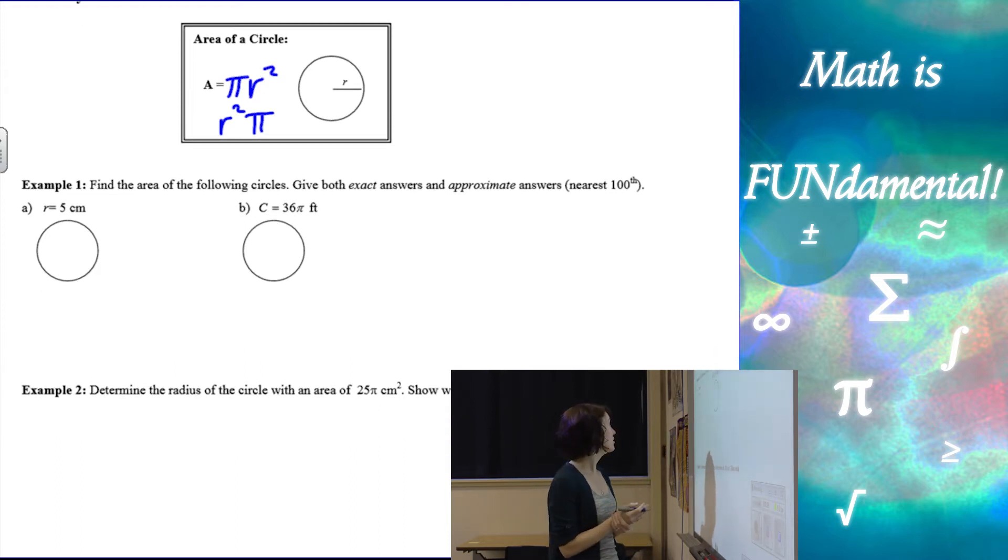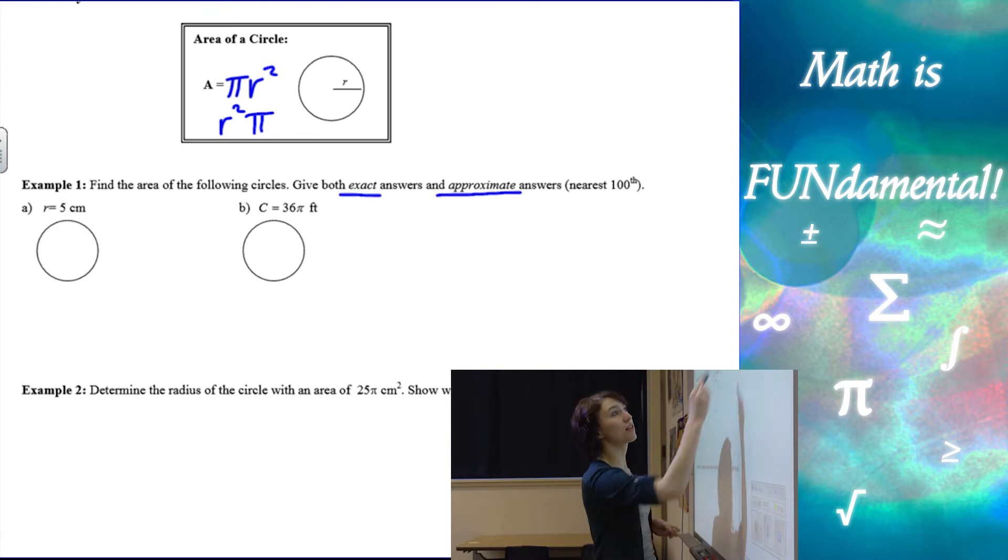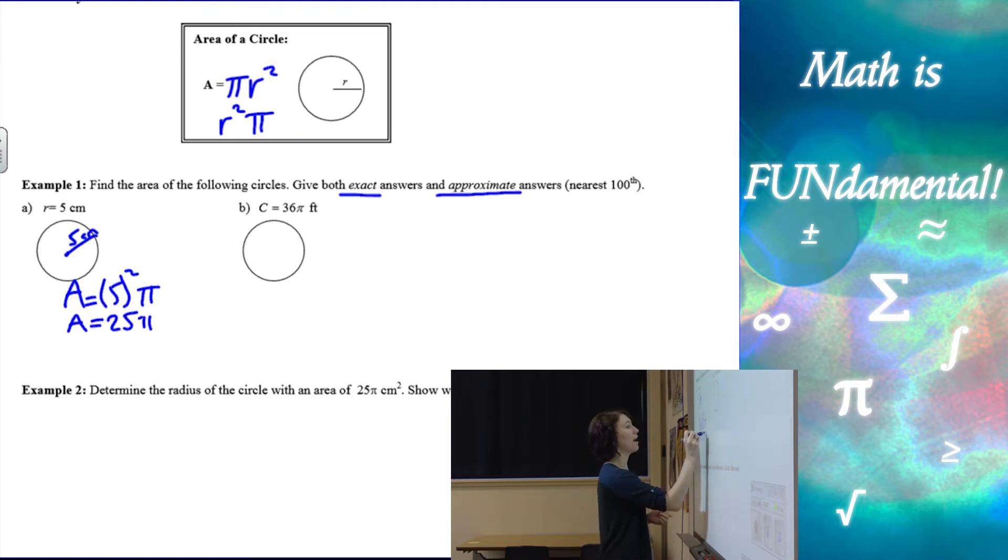Alright, so let's look at a couple quick examples. We have find the area, and then find both exact and approximate answers to the nearest hundredths. So we'll talk about the difference between those. So if I have a radius of 5 centimeters, then my area, if I follow my formula, is the radius, which is 5 squared times pi.